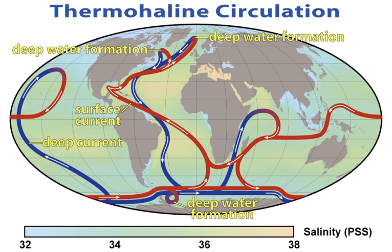The thermohaline circulation is sometimes called the ocean conveyor belt, the great ocean conveyor, or the global conveyor belt. On occasion, it is used to refer to the meridional overturning circulation, often abbreviated as MOC. The term MOC is more accurate and well-defined, as it is difficult to separate the part of the circulation driven by temperature and salinity alone as opposed to other factors such as wind and tidal forces. Moreover, temperature and salinity gradients can also lead to circulation effects that are not included in the MOC itself.